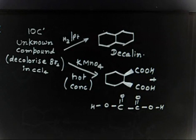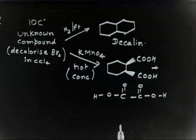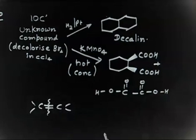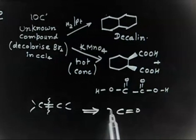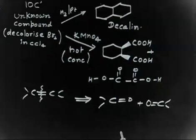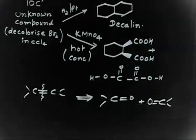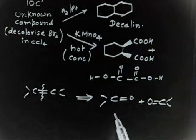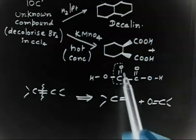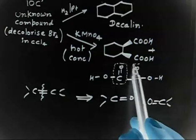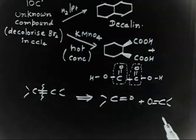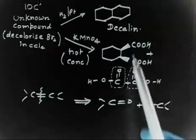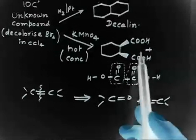To derive the original compound structure, remember that in ozonolysis or hot KMnO4 oxidation, an alkene breaks and gives two carbonyl compounds. If oxidation is done vigorously, those carbonyl compounds convert into acids. I need to count how many carbonyl groups I have. In the dicarboxylic acid product there are two COOH groups — that is two C=O. In oxalic acid there are two more C=O. So in total I have four C=O groups.